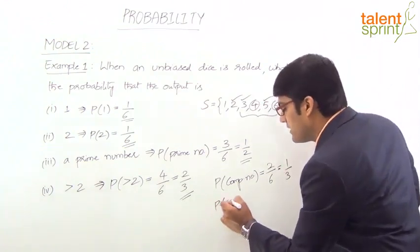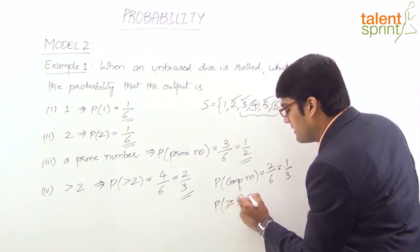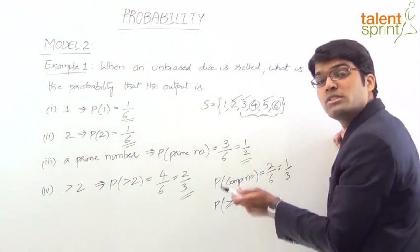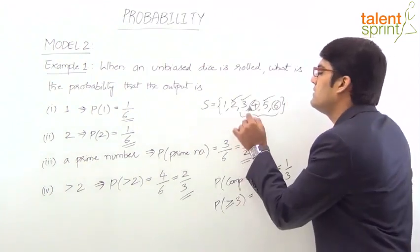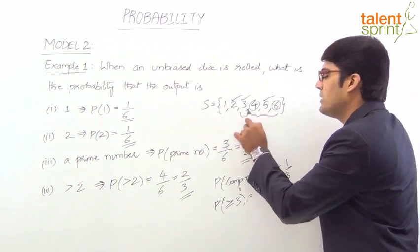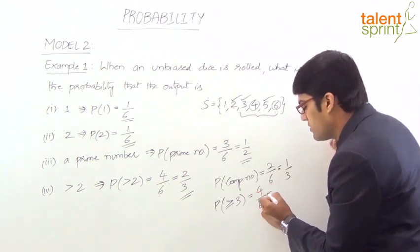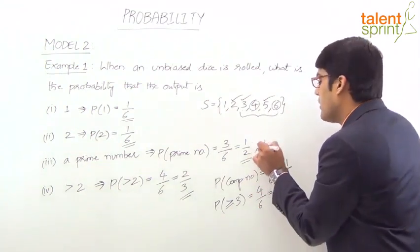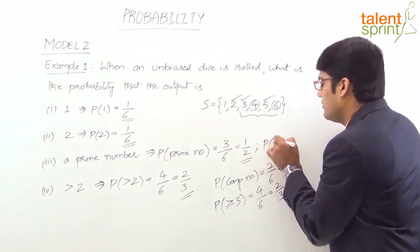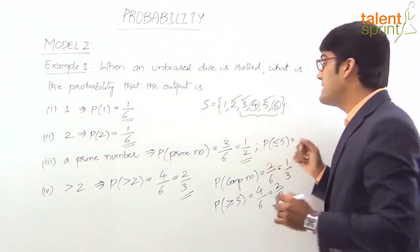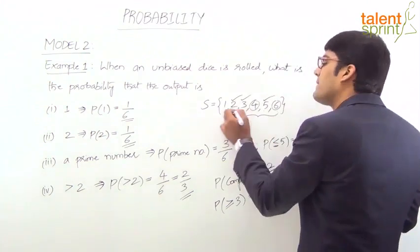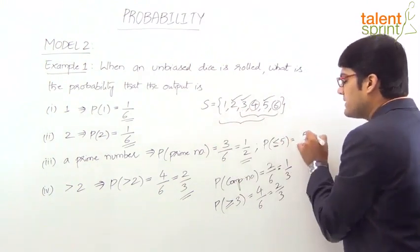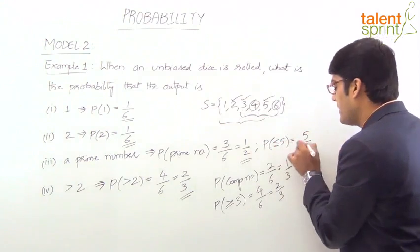What is the probability that the output is greater than or equal to 3? The outcomes 3, 4, 5, and 6 satisfy this condition — that's 4 favorable outcomes out of 6, giving 4/6 = 2/3. What is the probability that the output is less than or equal to 5? The favorable outcomes are 1, 2, 3, 4, and 5 — that's 5 out of 6, so the answer is 5/6.